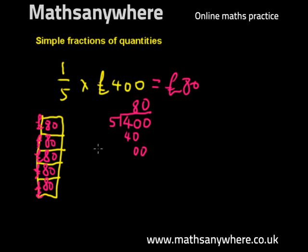We want to go a bit further into the maths behind this. We can say one-fifth times 400 is equal to 400 divided by five, and that's equal to eighty.